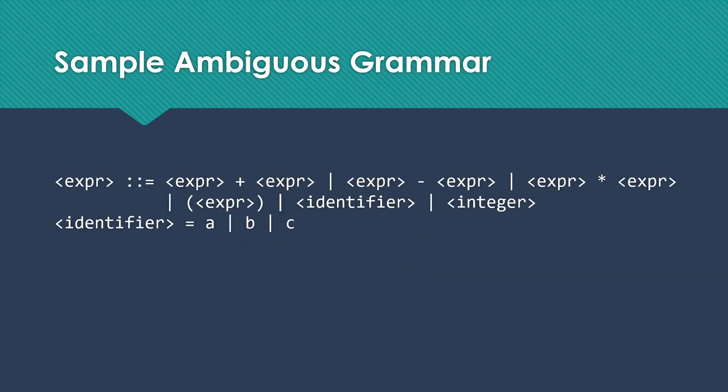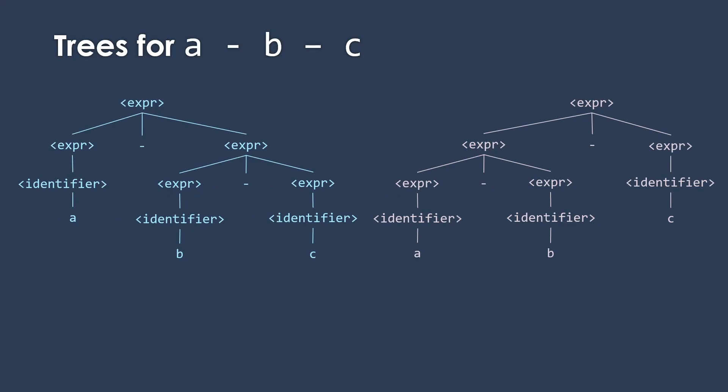So here's an example of an ambiguous grammar, similar to what we were looking at in the parse tree video. Let's consider what that looks like. Let's prove that it's ambiguous. So I'm going to use the sentence A minus B minus C. If we look at the grammar and the sentence, we'll see that we can get two different parse trees here.